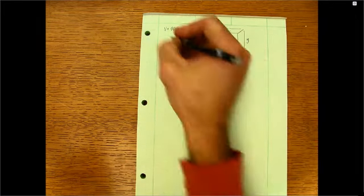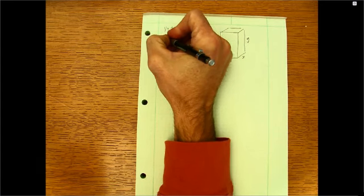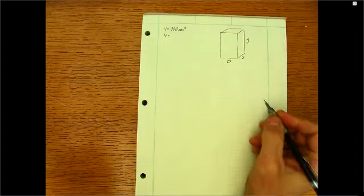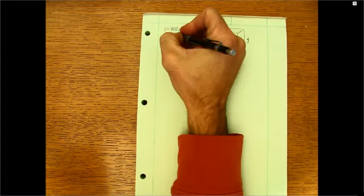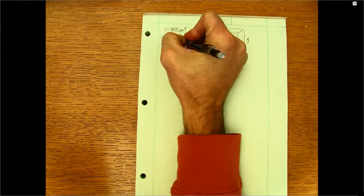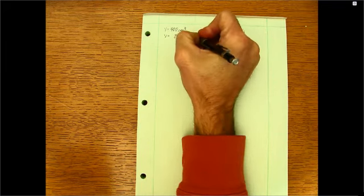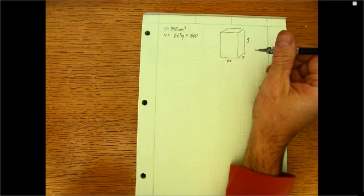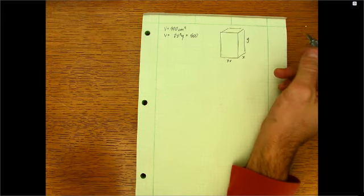So let's dive in. And if we think of the volume as length times width times height, then we can see pretty quickly that it's going to be 2X squared Y. And that's got to be equal to 500 if we're working in centimeters. So that's the cubic centimeter constraint for volume.